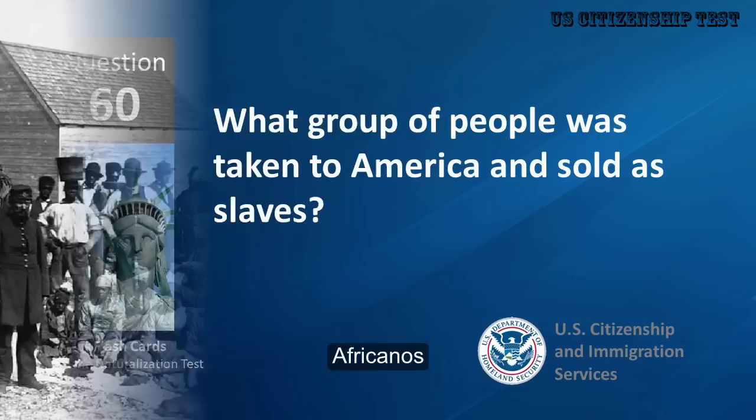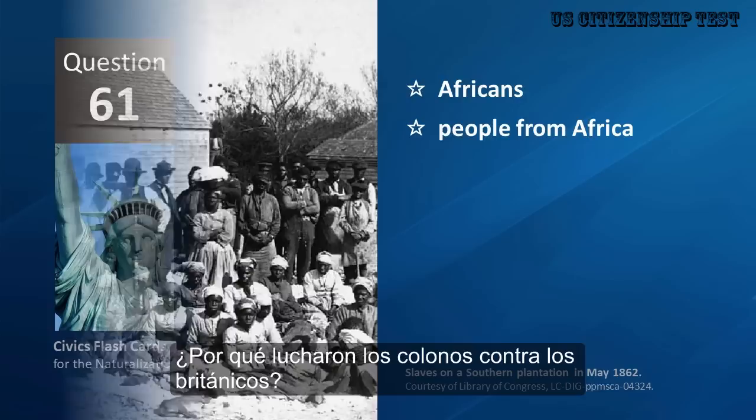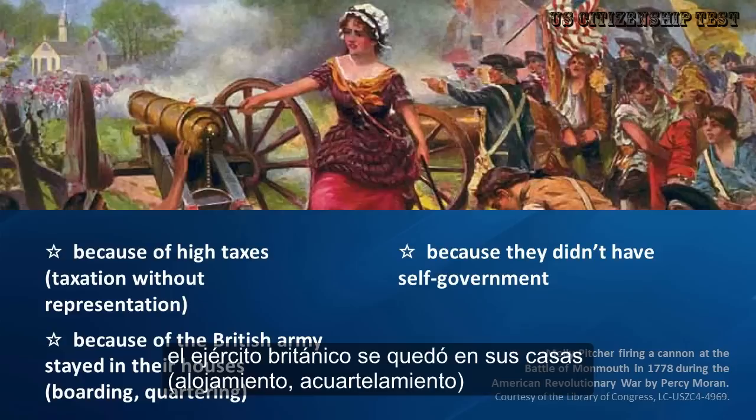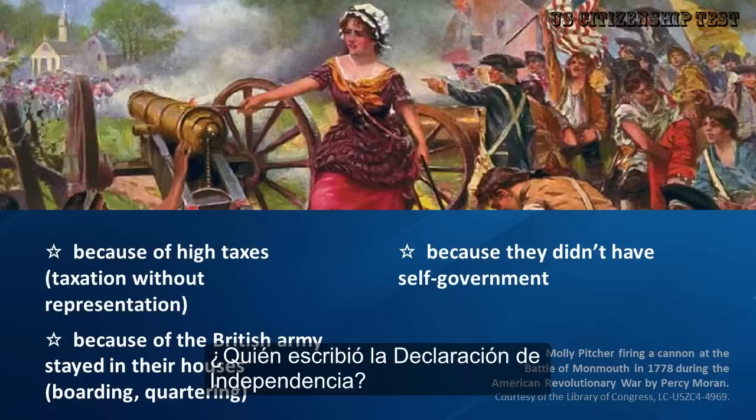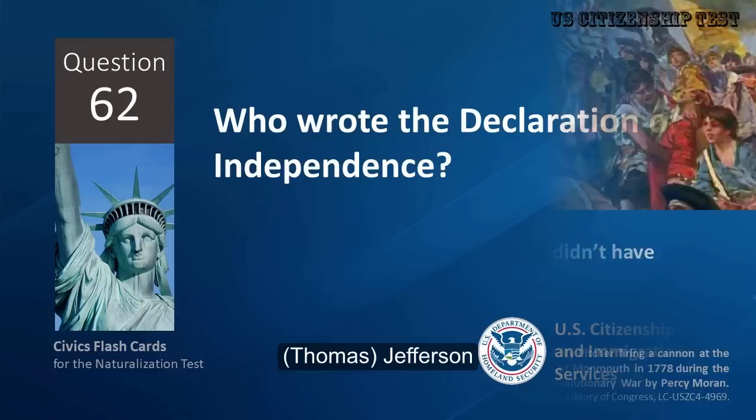What group of people was taken to America and sold as slaves? Africans, people from Africa. Why did the colonists fight the British? Because of high taxes, taxation without representation, because the British Army stayed in their houses — boarding and quartering — because they didn't have self-government.